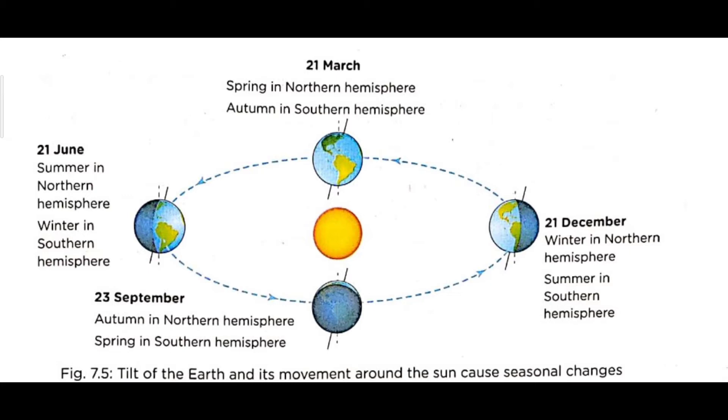In the Northern Hemisphere, winter corresponds to summer in the Southern Hemisphere. In this diagram, we can see all these seasonal differences.